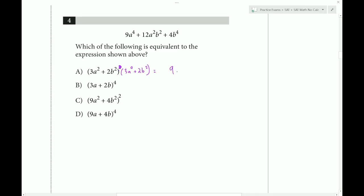The first term gives us 9a to the fourth. The inner would be 6a squared b squared, and the outer would also be 6a squared b squared. The last would be 4b to the fourth. Combining these, we get 12a squared b squared and 4b to the fourth, which matches the original. This is our correct answer.